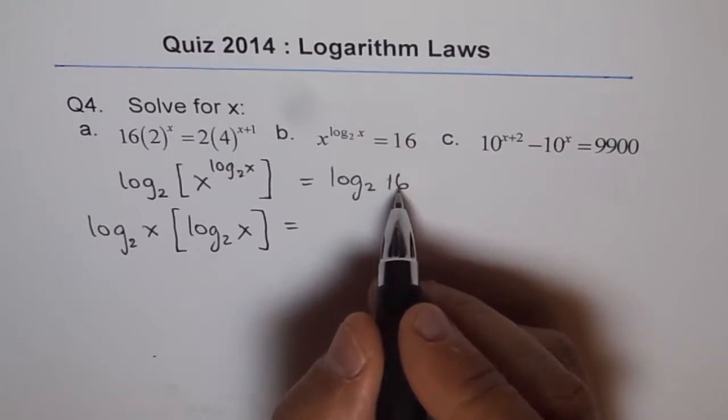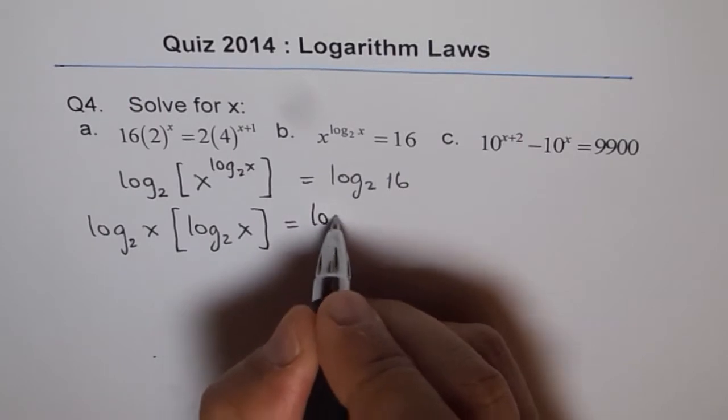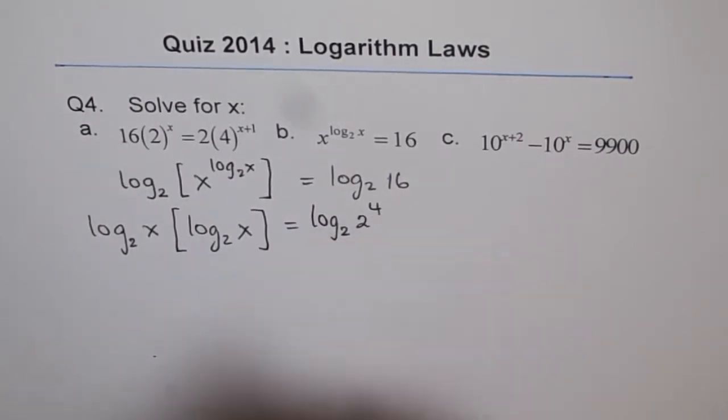And now 16 can be written as 2 to the power of 4. So we can write log to the base 2 of 2 to the power of 4. 16 is 2 to the power of 4.